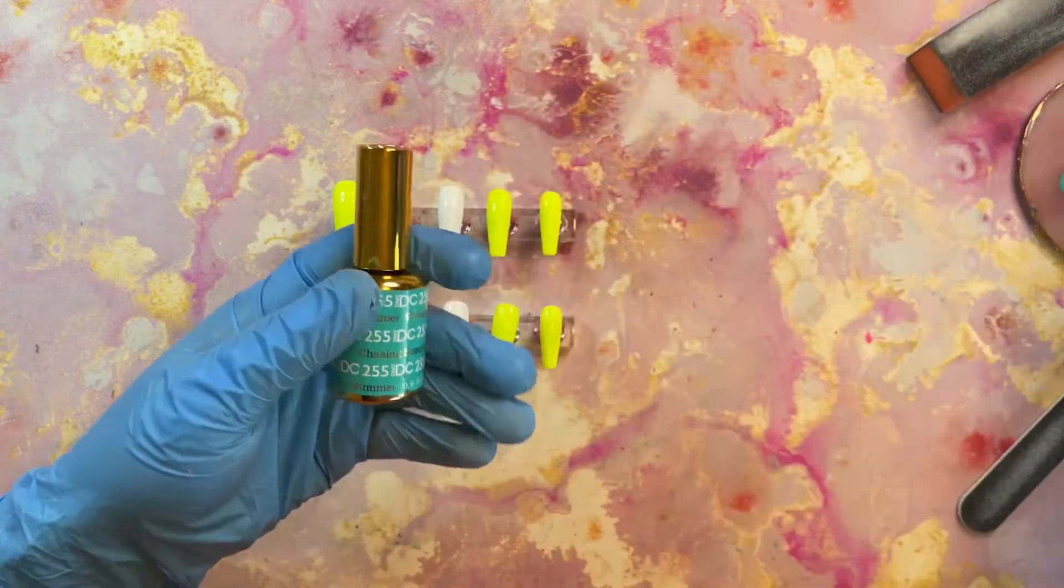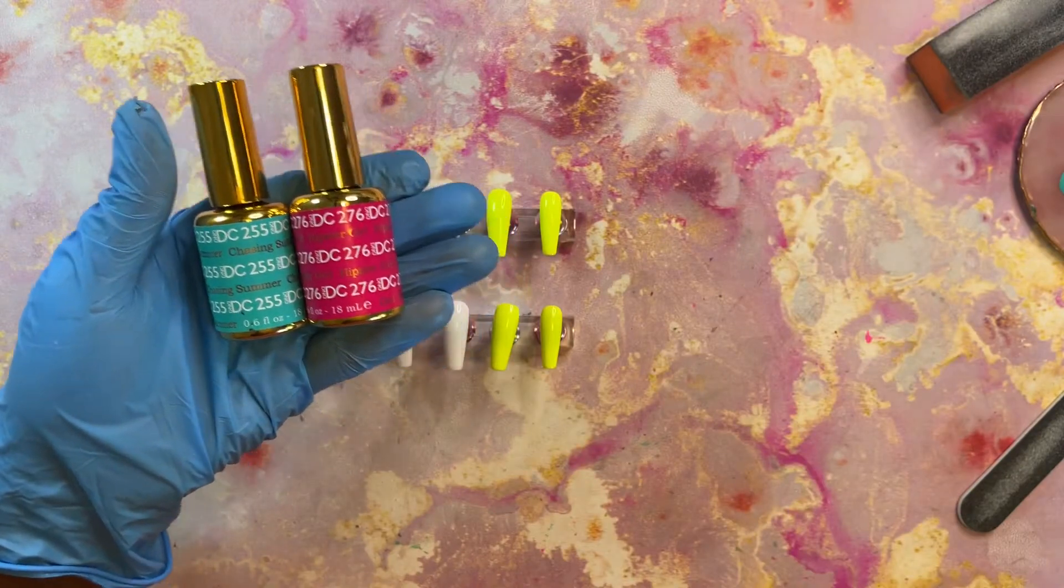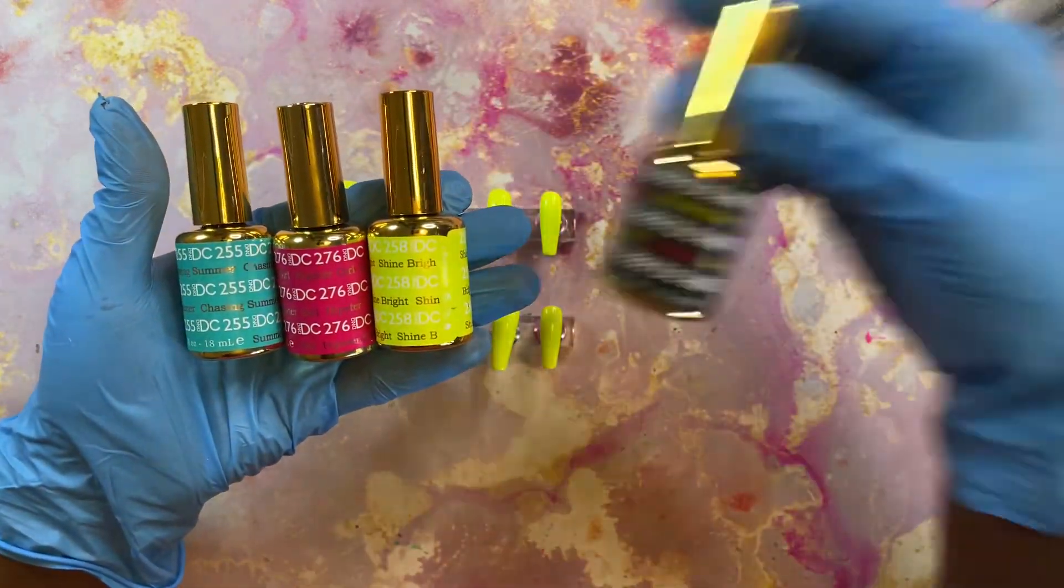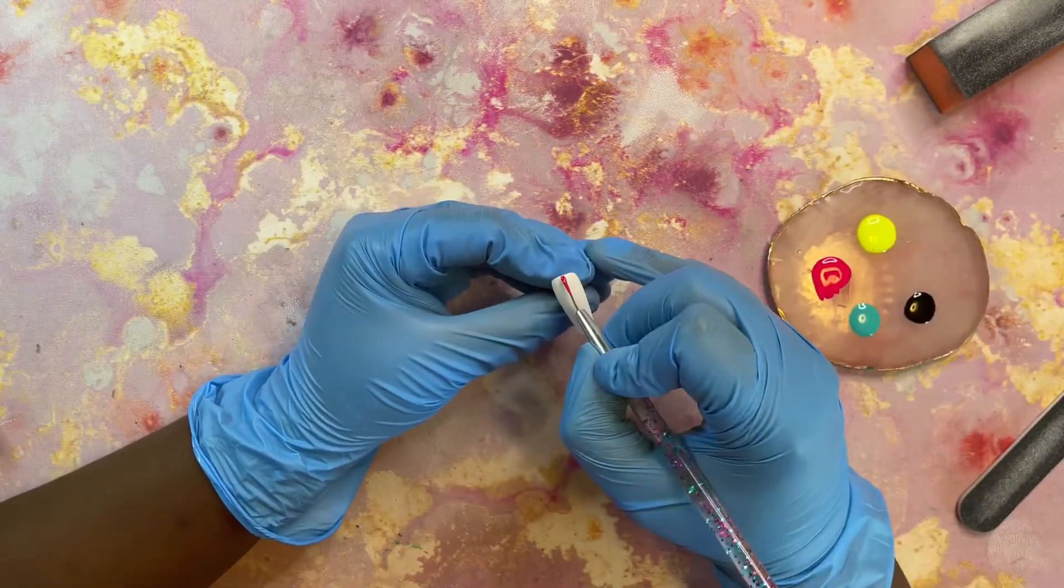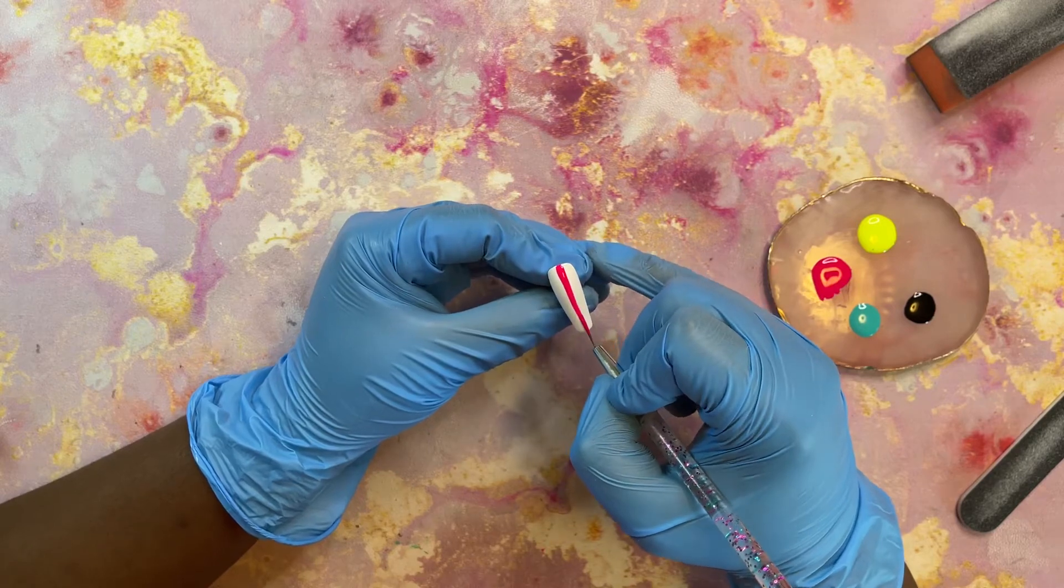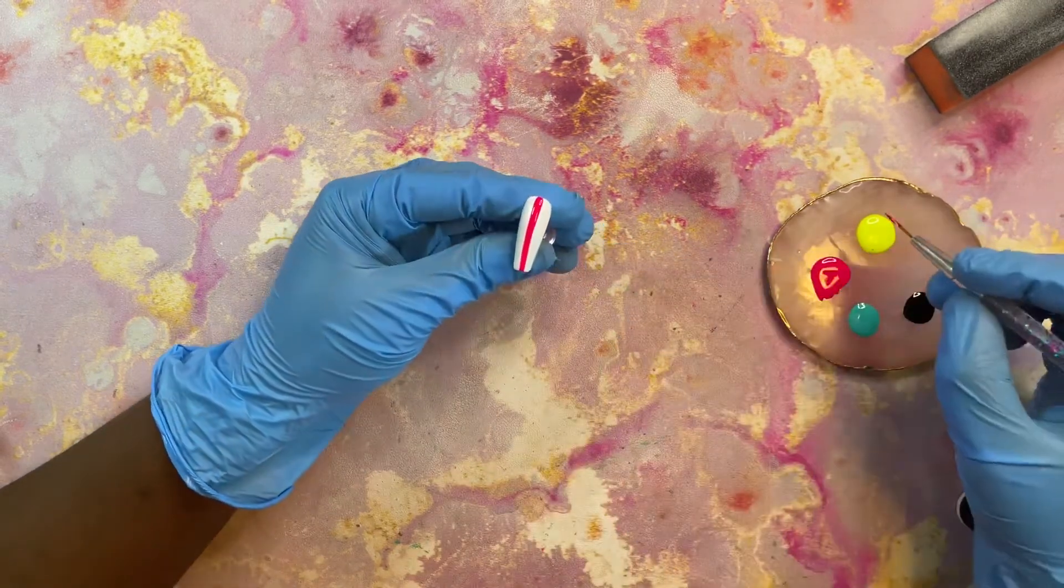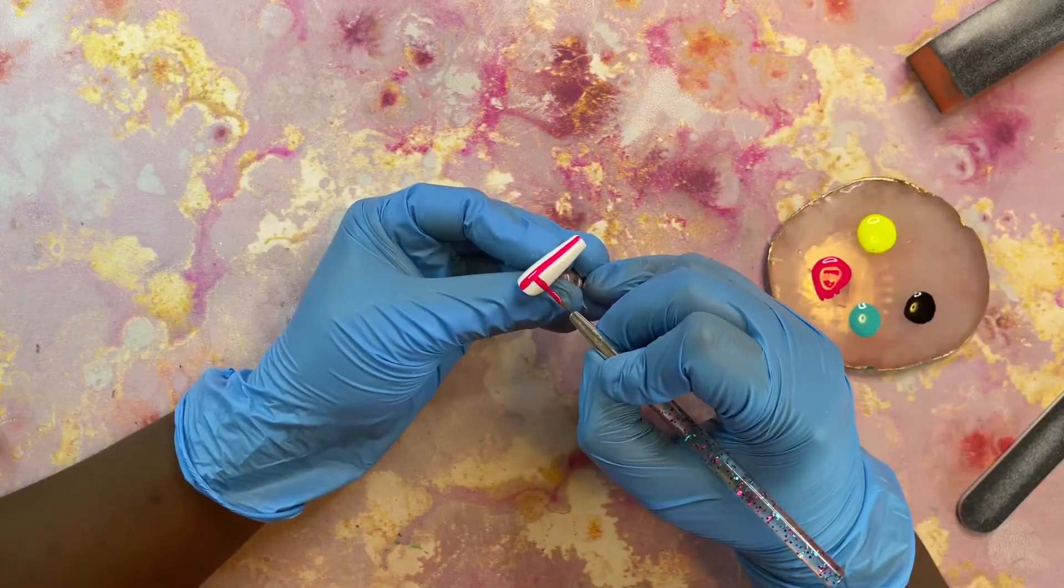This is what the nails are looking like so far, and these are the other gel polishes that I will be using to create this design. I've always loved abstract nail designs but I always thought it was so hard because the lines seemed like they had to be perfect with squares and triangles. It just seemed so complicated, but I decided to try it and surprisingly it came out really well. I'm so happy that I did.